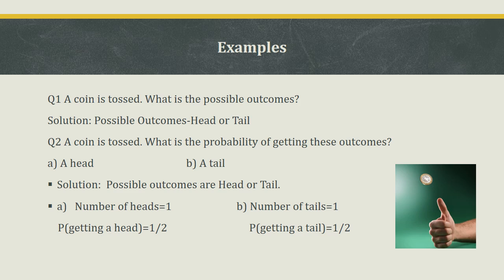First example: a coin is tossed. The possible outcomes are head or tail. The probability of getting a head equals number of favorable outcomes upon total outcomes. The number of heads is 1 and total outcomes are 2, so probability of getting a head = 1/2. Similarly, the probability of getting a tail is also 1/2.